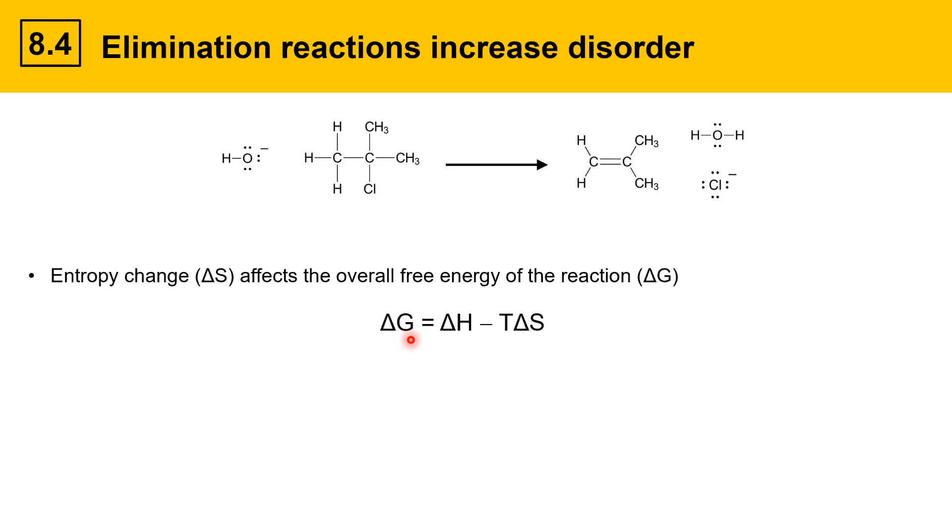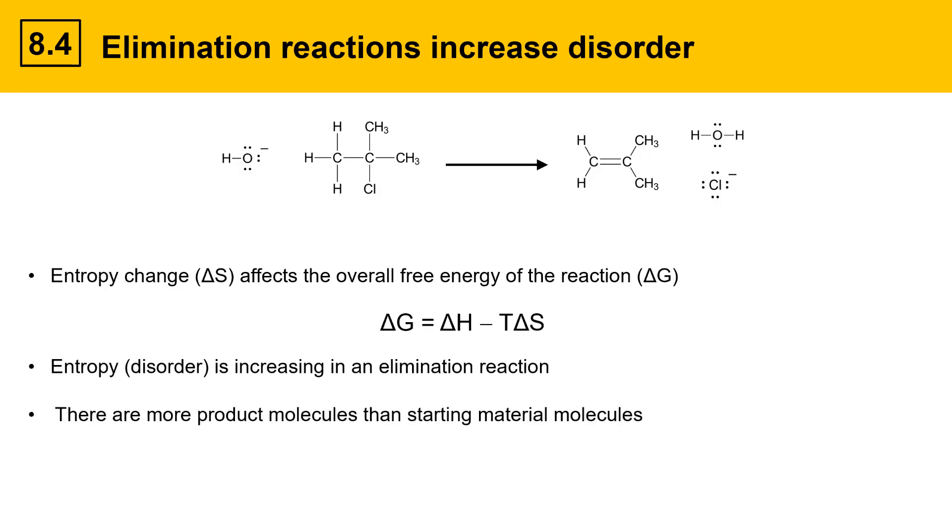Delta G, the overall energy of the reaction, is equal to delta H, the enthalpy term, minus T times delta S, the entropy term, where T is temperature in Kelvin. Entropy or disorder is increasing in an elimination reaction. There are more product molecules than starting molecules in this particular reaction. On the left side, you can see there are two species, while on the right side, there are three. This is an increase in disorder.